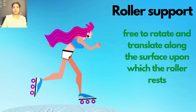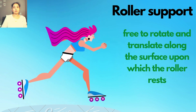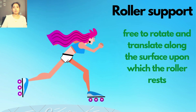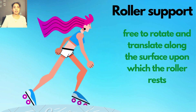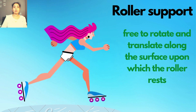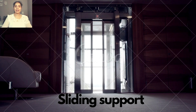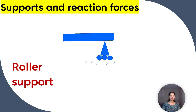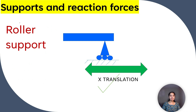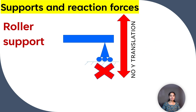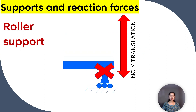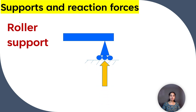The lateral load could be snow, a gust of wind, or an earthquake. Since most structures are subjected to lateral loads, a building must have other types of supports in addition to roller supports. A sliding door is an example of a sliding or roller support. Roller supports allow rotation. This roller support allows translation in the x direction but does not allow translation in the y direction. The resulting reaction force is always a single force that is perpendicular to and away from the surface.